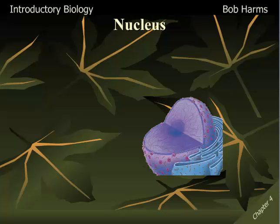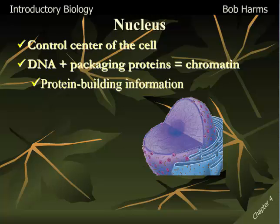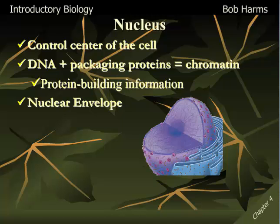The largest organelle in the cell, and the easiest to see, is certainly the nucleus — the control center of the DNA. The DNA in your cell is combined with packaging proteins that cause the DNA to be wound up into smaller chemical bundles, allowing it to fit in your nucleus. This normal form is called chromatin — your DNA plus these packaging proteins — providing protein-building information to your cell. The membrane that wraps around the outside is called the nuclear envelope, or nuclear membrane — a double layer of phospholipids just like your plasma membrane. It has lots of little pores that allow chemicals to move in and out so the nucleus can communicate chemically with the rest of the cell, while the pores are small enough to prevent the DNA from leaving.